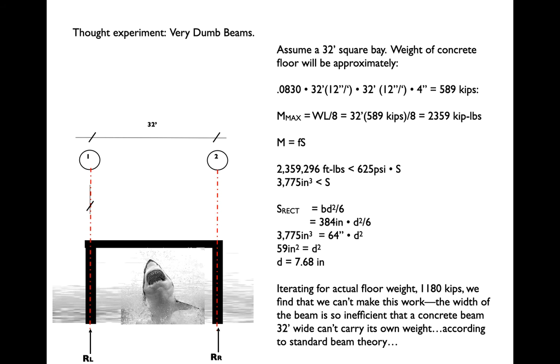Concrete is heavy, and we have quite a bit of it if we're doing a 32-by-32-foot slab. So we need to find a section modulus that, in this case, when we do M equals Fs, we find that our required section modulus is 3,775 inches cubed, right? Pretty serious. If we then plug that back in, using our formula for the section modulus of a rectangle, what we end up with is finding that the section modulus necessary to carry a 4-inch slab is actually almost 7 and 3 quarters inches, right? That the beam actually needs to be deeper than the slab we want to carry.